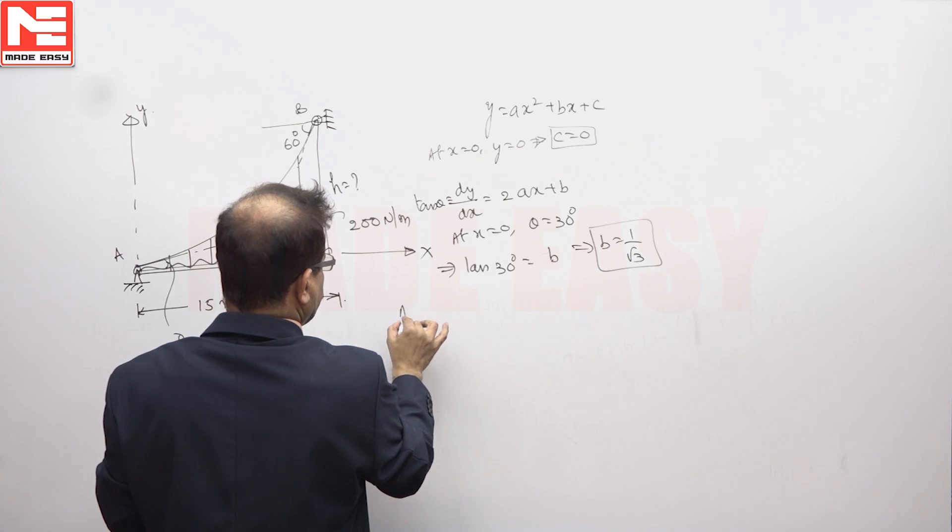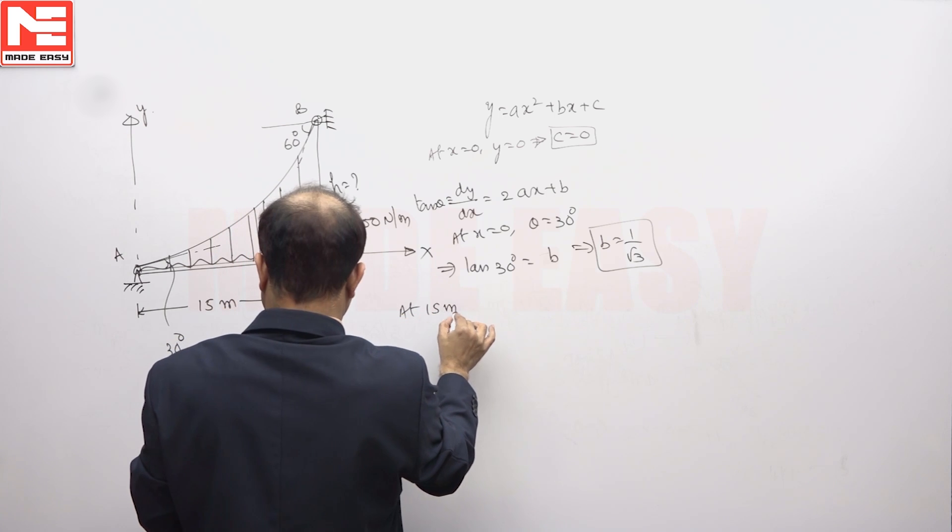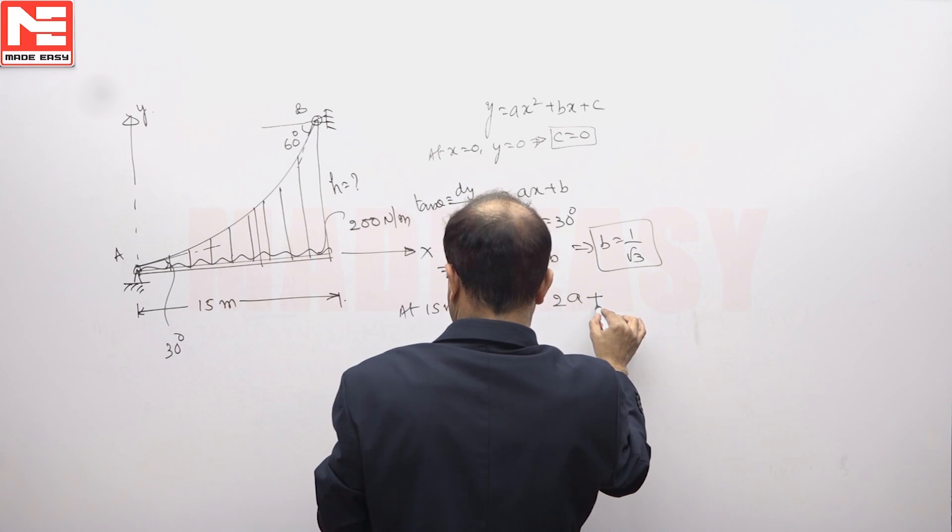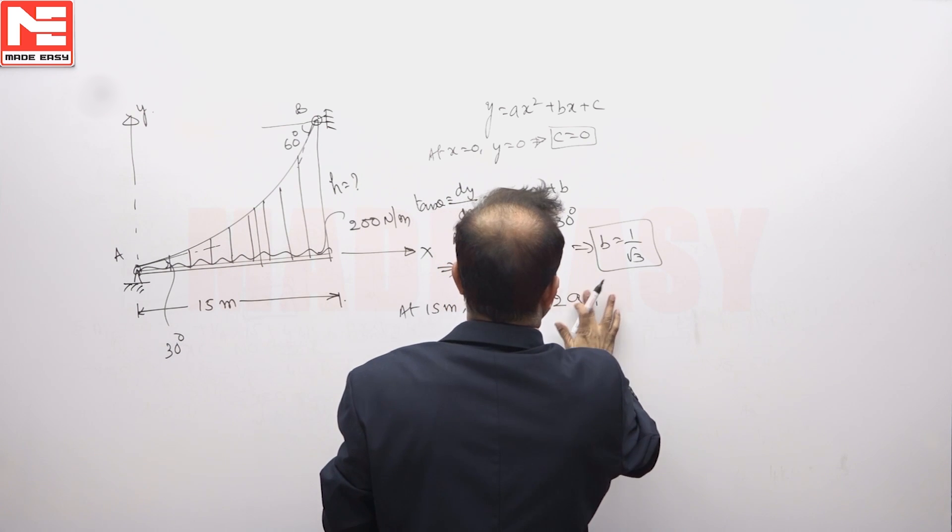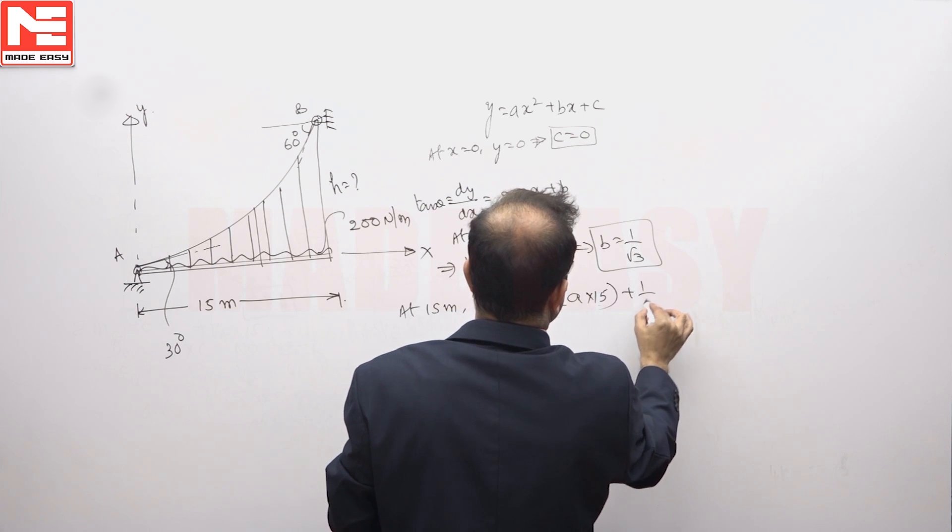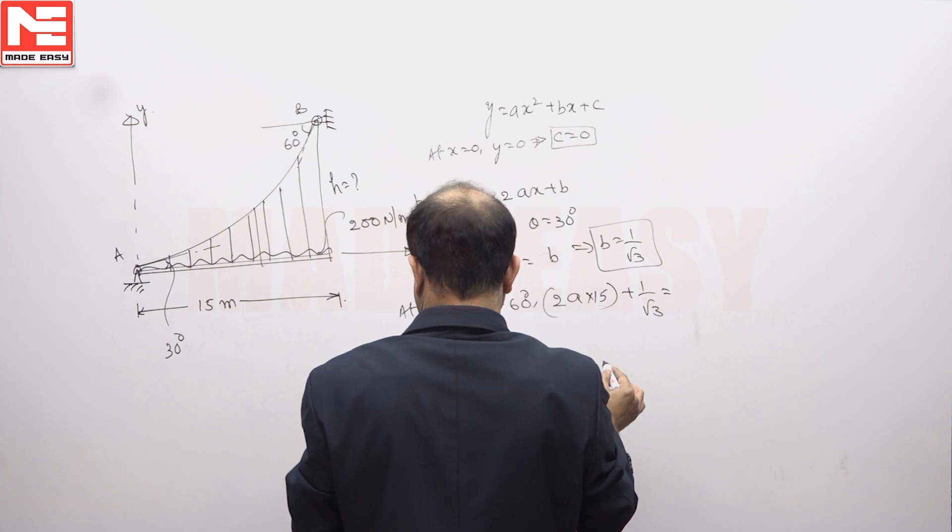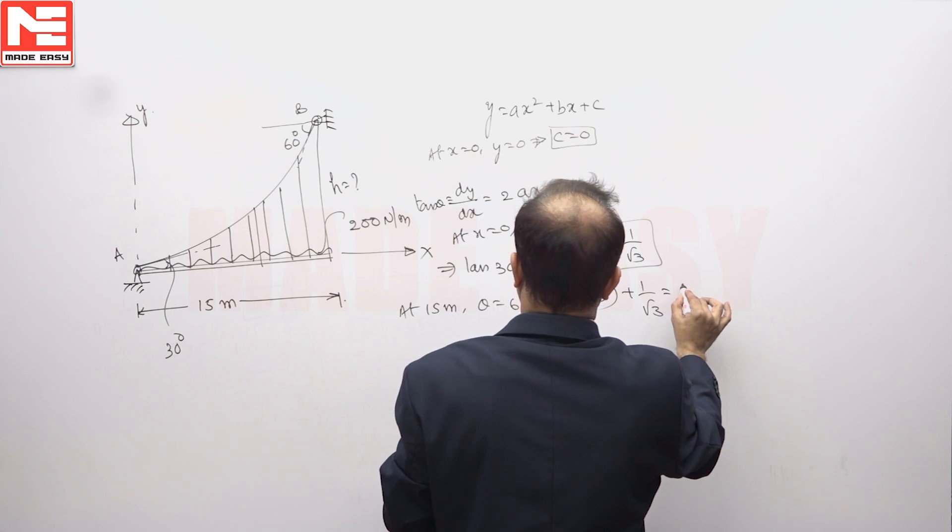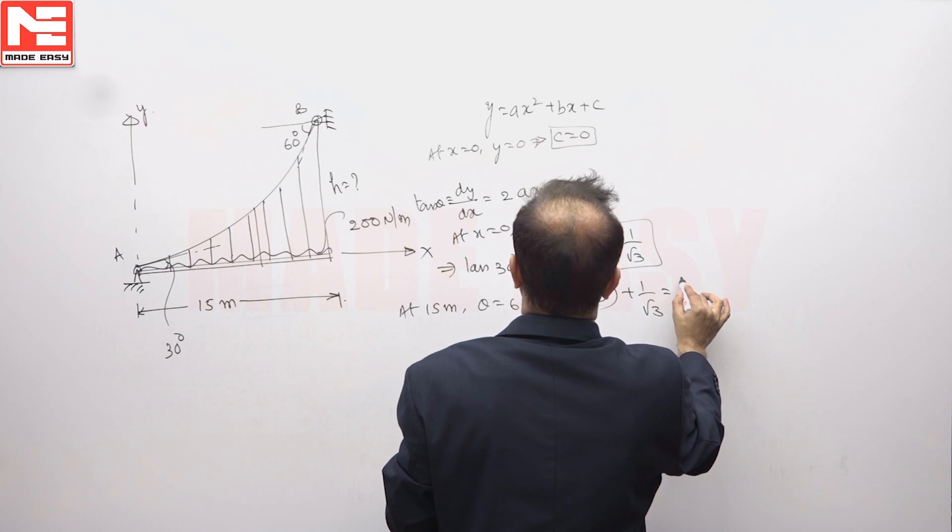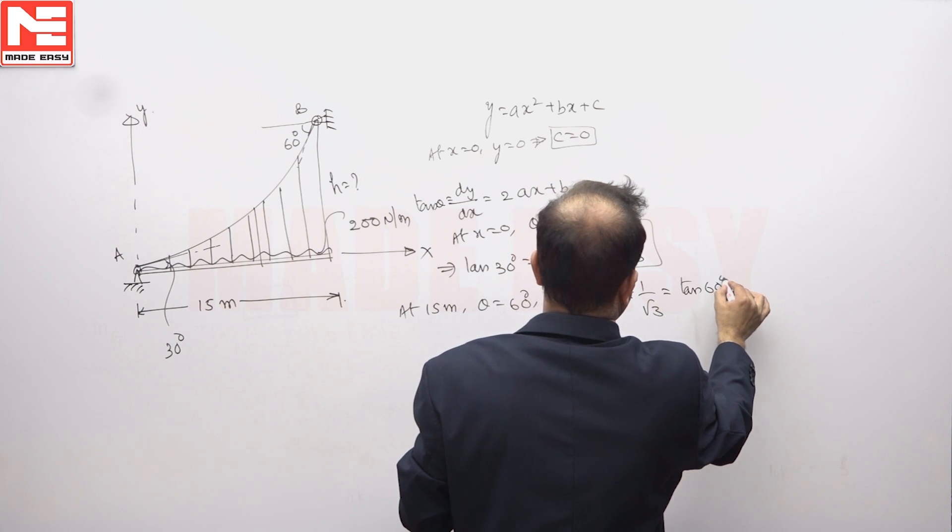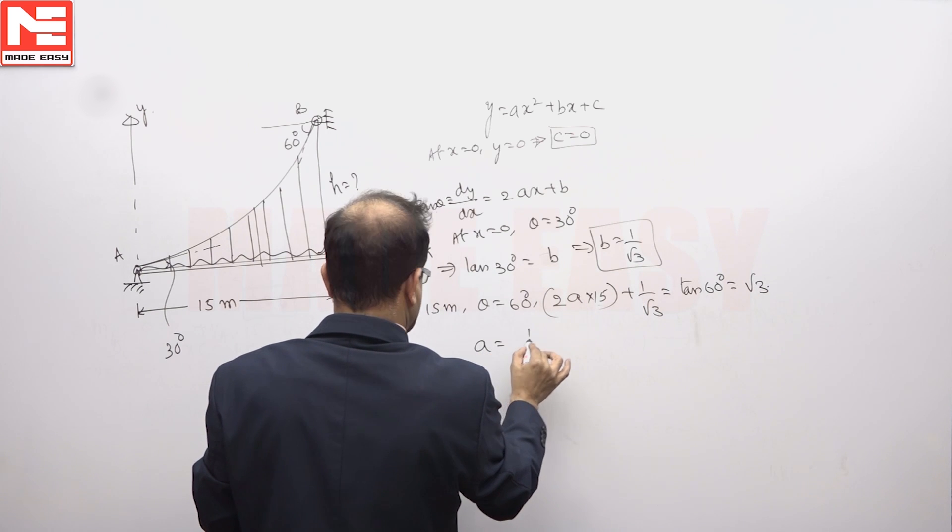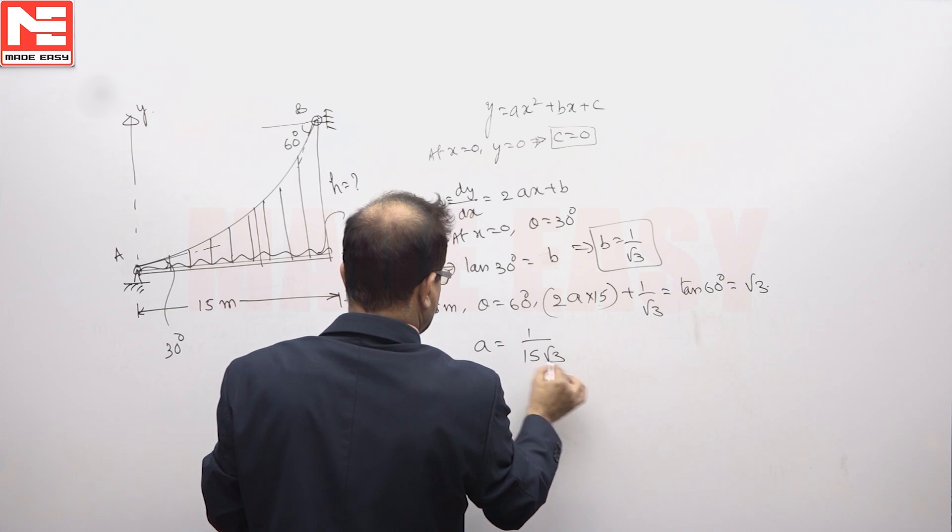At 15 meters, theta is 60 degrees. So 2a plus 2ax, 2ax means 2a into 15 plus b, plus b is 1 by root 3, is equal to tan 60. Tan 60 degrees will get root 3. So from this, you will get a as 1 by 15 root 3.